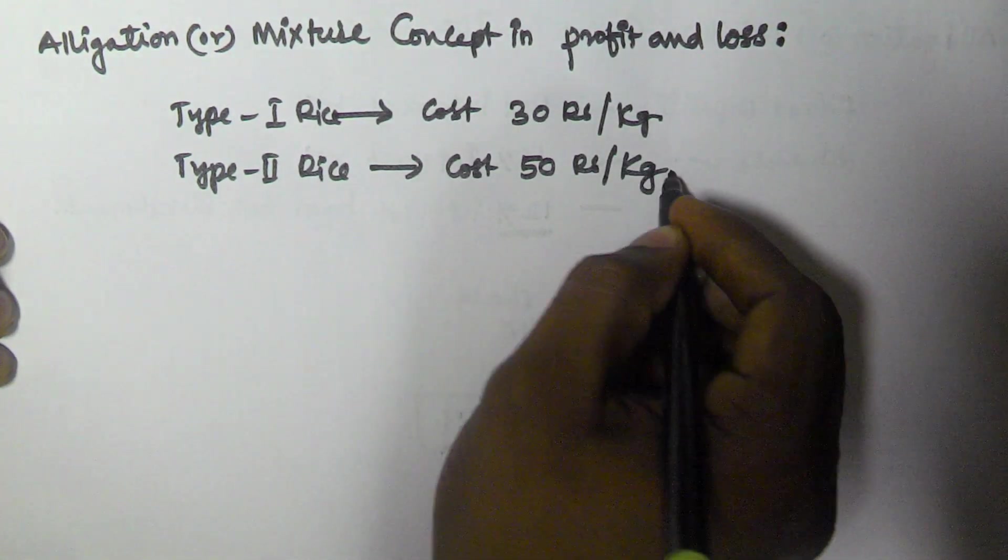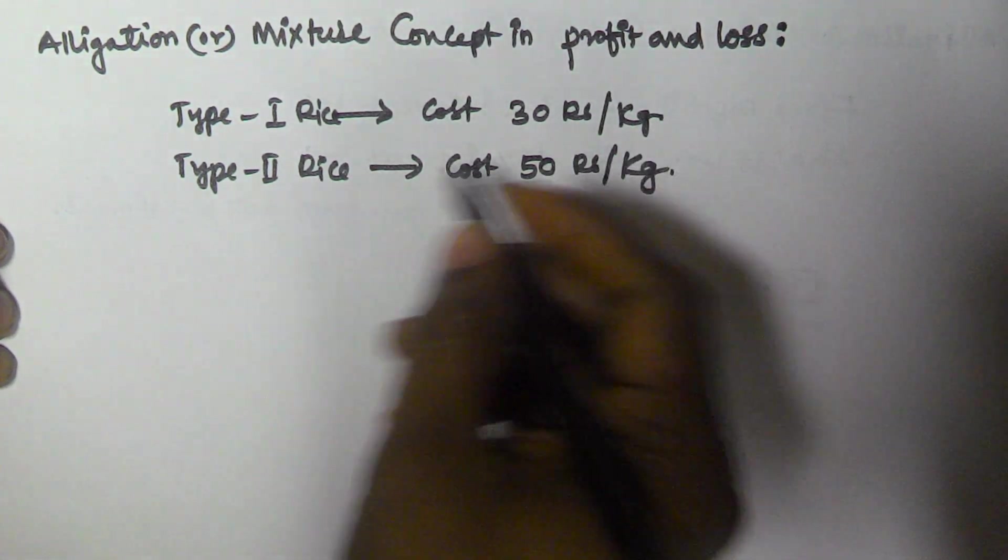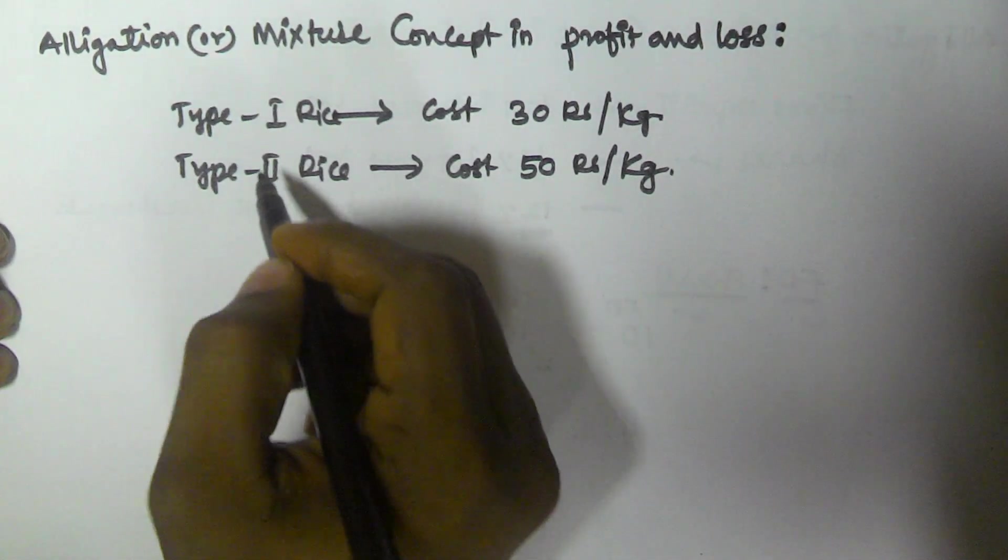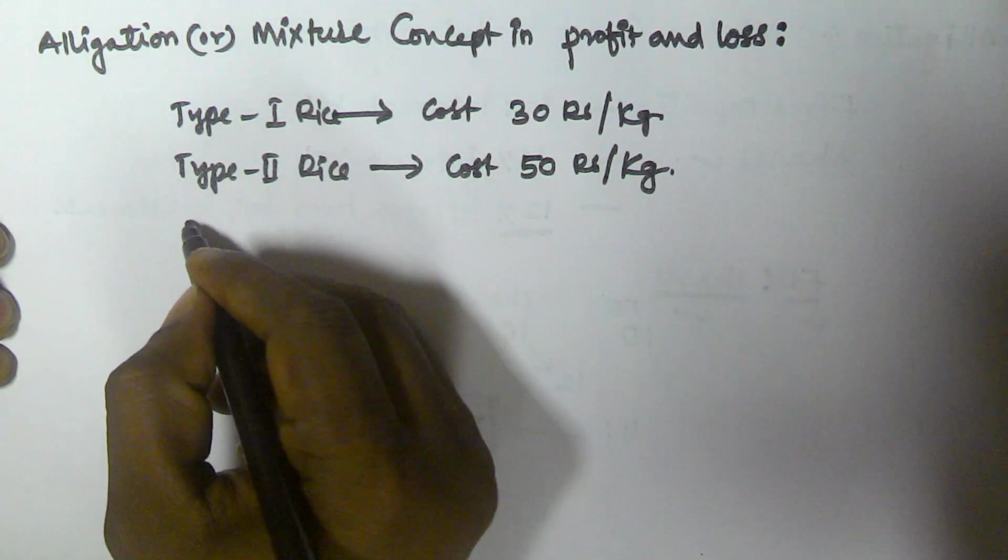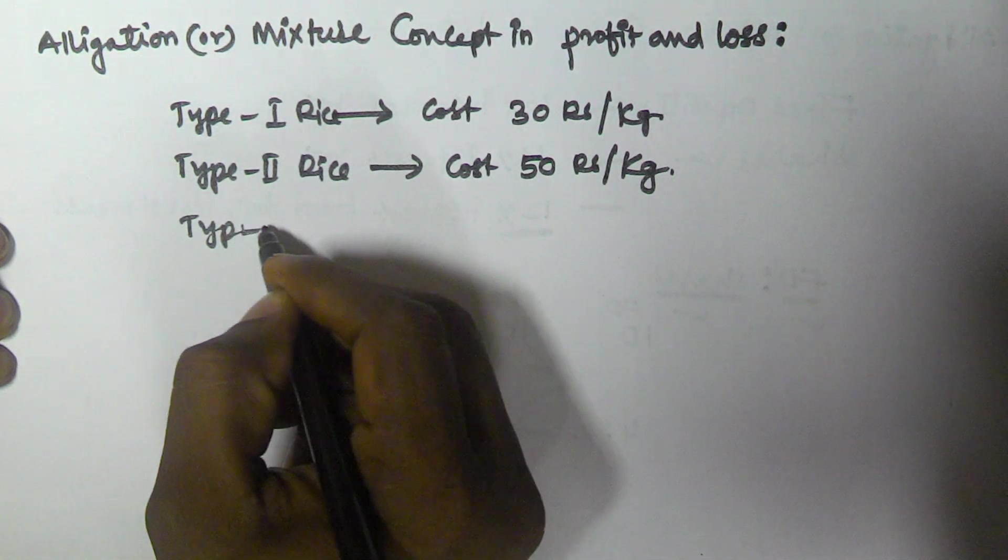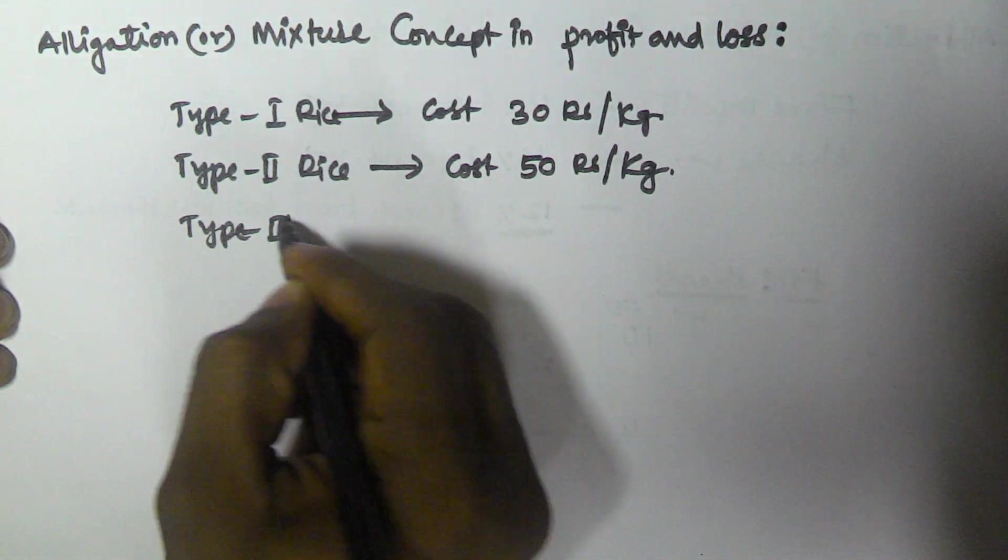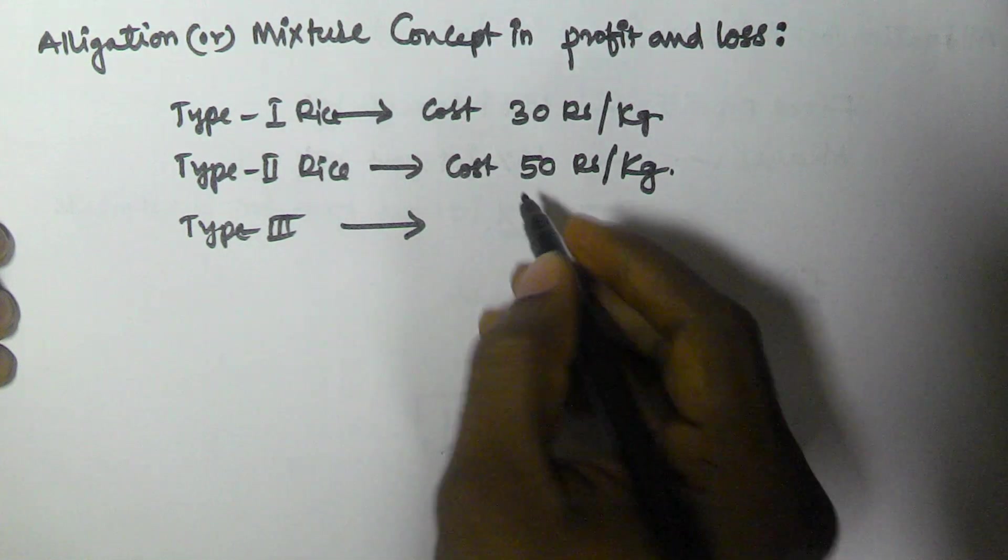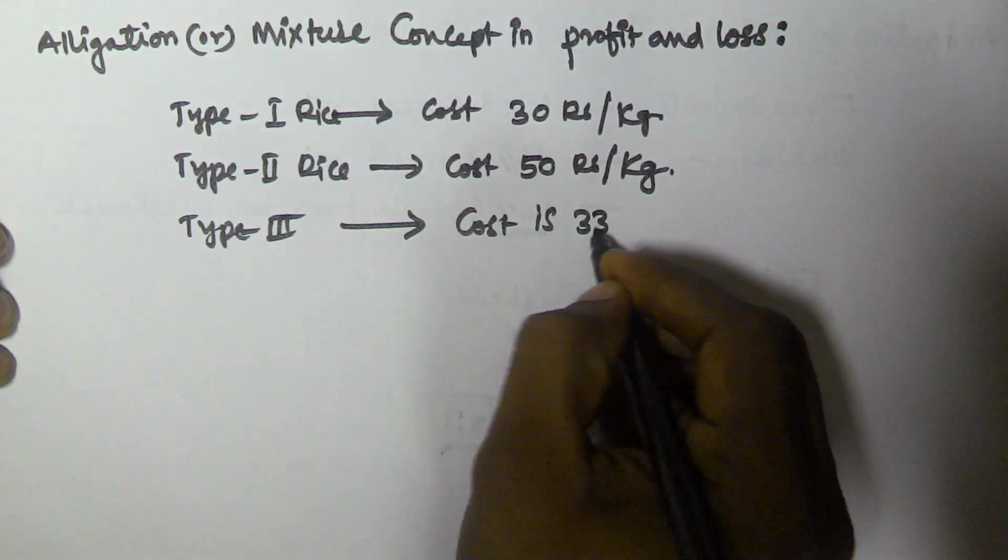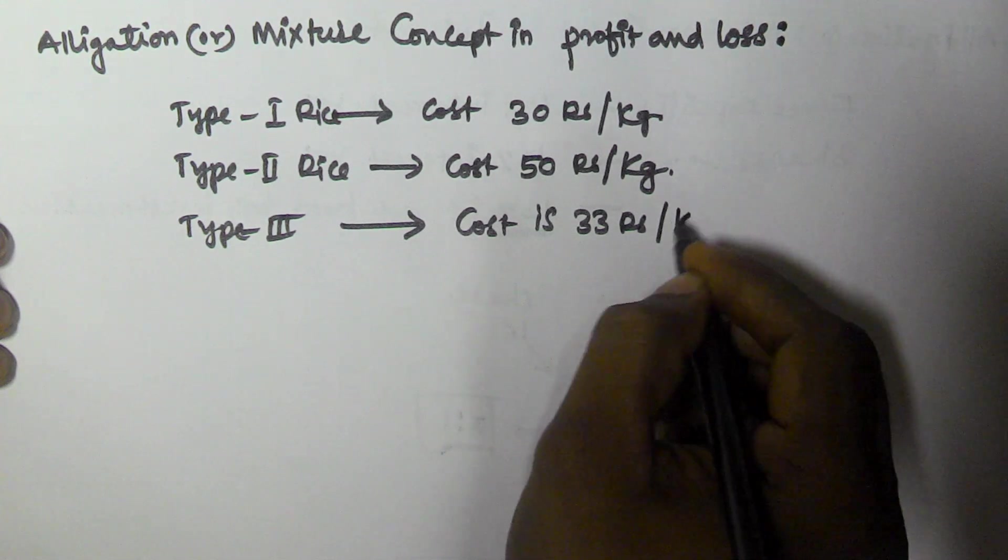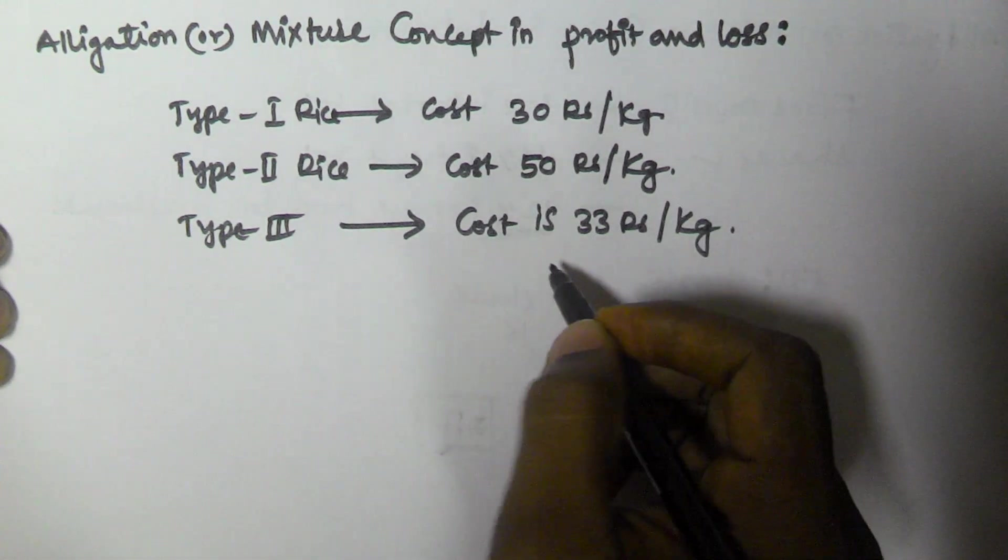He added Type 1 to Type 2 rice and created a Type 3 rice. The Type 3 rice cost is 33 rupees per kg.